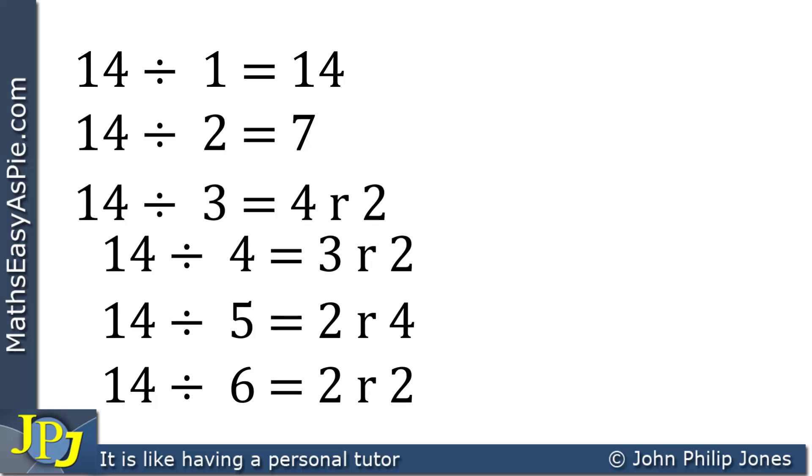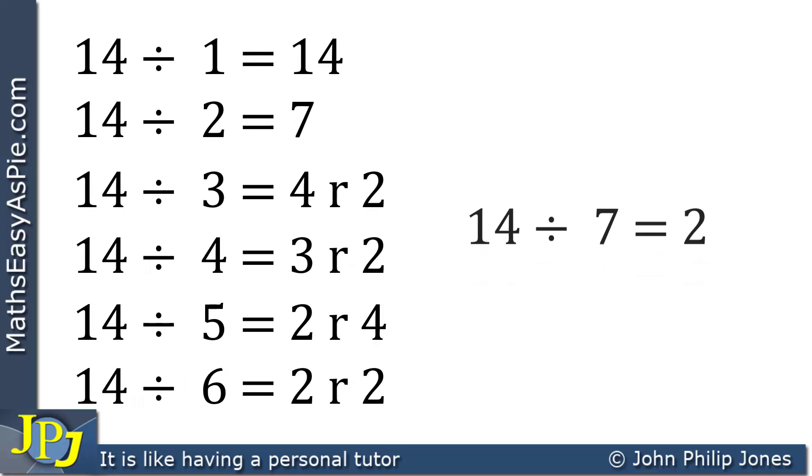I'll continue on the next slide, and we can see I've taken 14 and divided by 7, and that goes twice. Consequently, it goes exactly and there is no remainder. So we can say that 7 is a factor of 14.